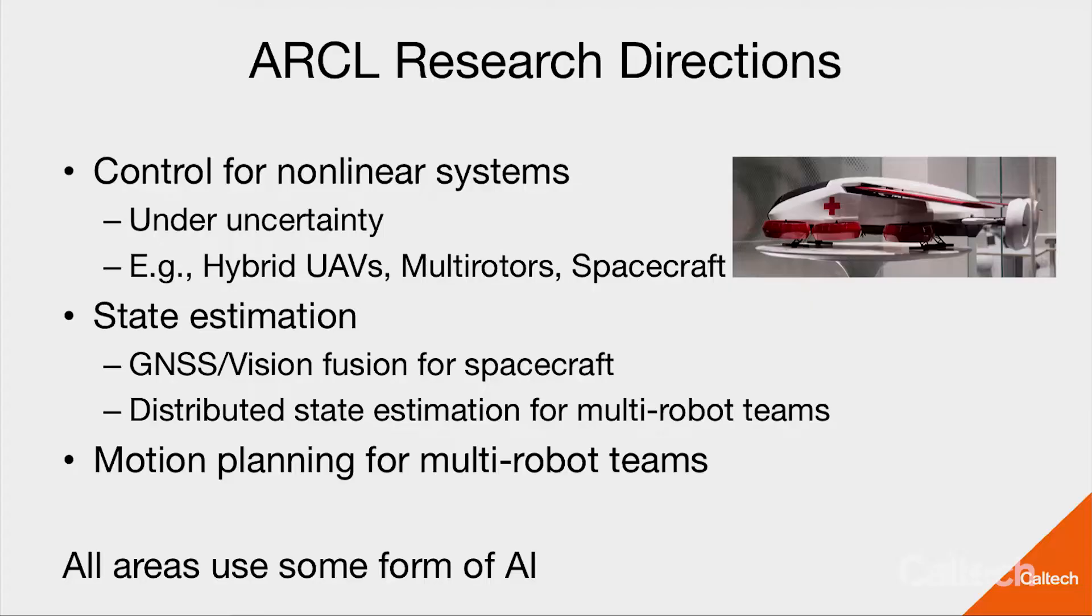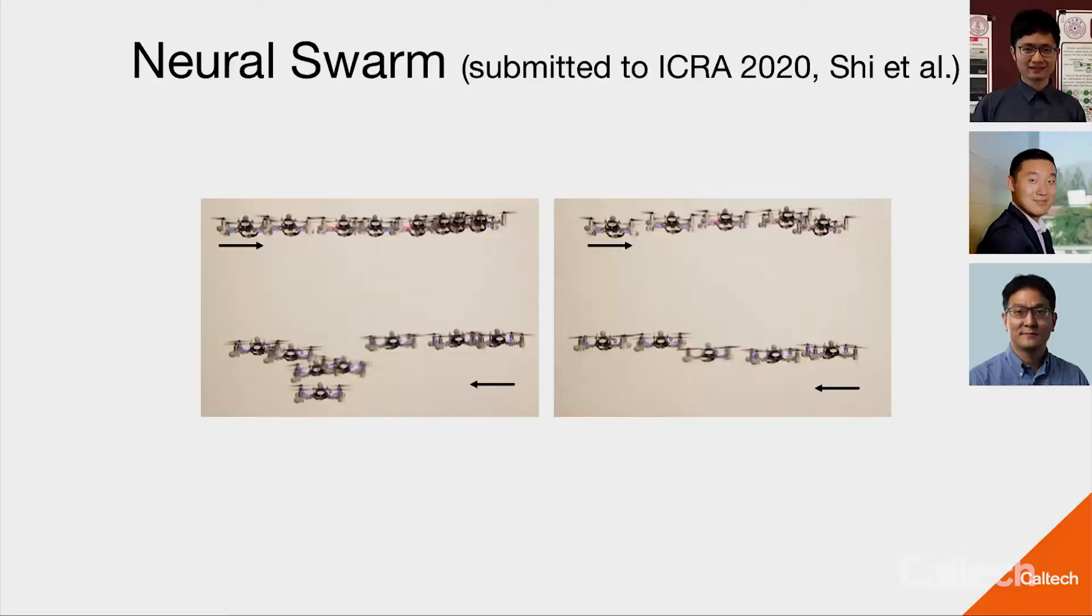So in general, our research direction is in control of nonlinear systems. We work a little bit in state estimation, so for spacecraft fusion of GNSS and vision. And we also do a bunch of motion planning for multi-robot vehicles. And actually, all of those areas use some sort of AI. Not all of them use specifically machine learning, but some of them use more traditional AI techniques. All right, so with that, I want to present one concrete research project that we actually just submitted to one of the top robotics conferences called ICRA. This is work together with graduate student Guan Yer Shi, Yisong, and Soon-Jo Chung.